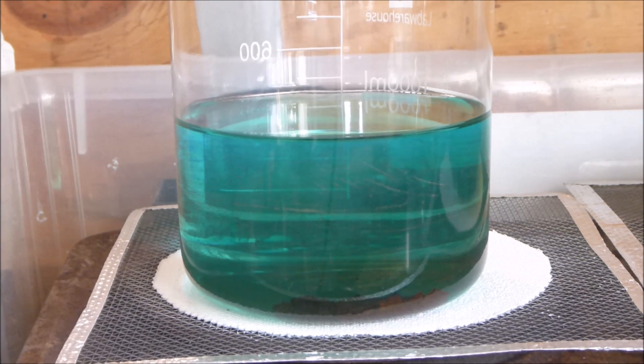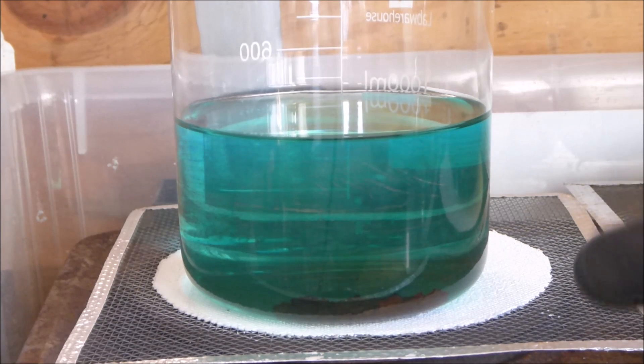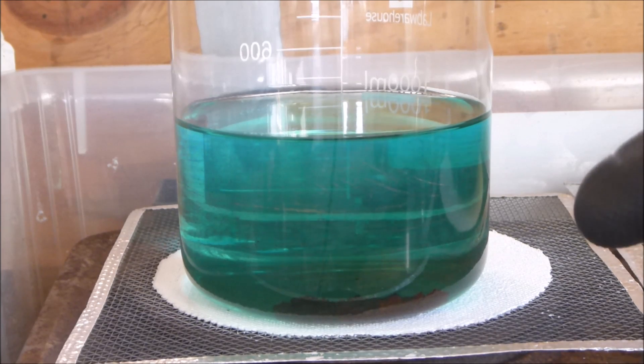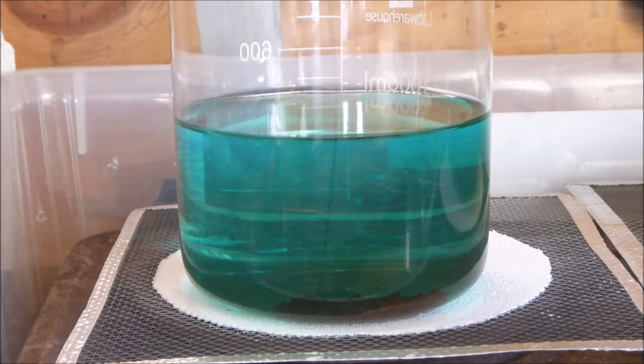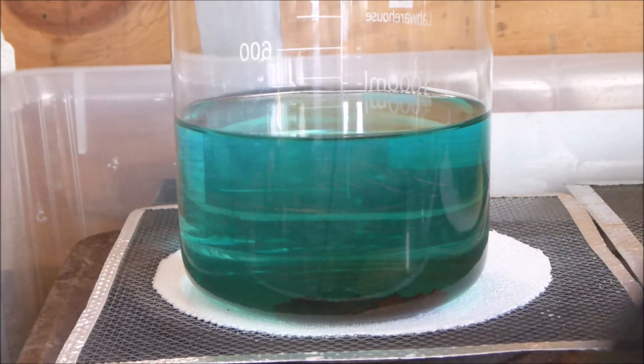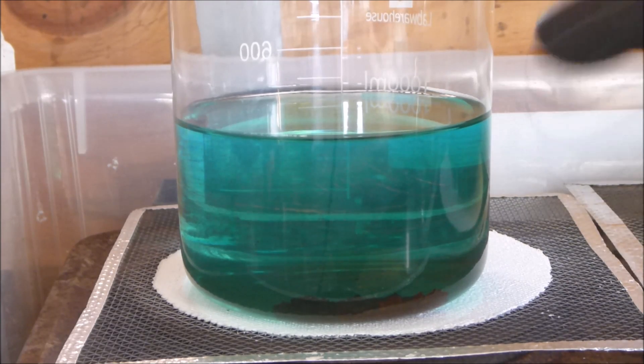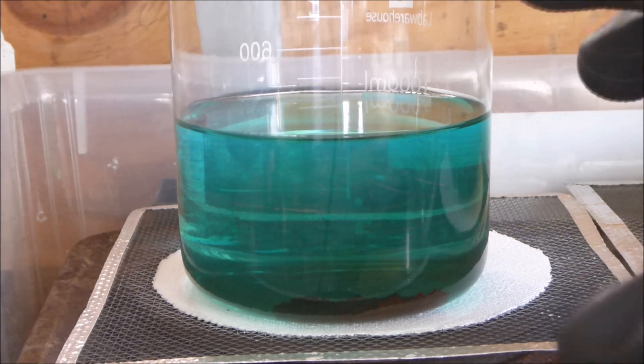Then I poured off the hydrochloric acid. I did do a stannous test just to make sure there was no gold in solution, but there hardly ever is at that point and there wasn't in this case. So the next step is that I dried out the material. At that point it was bond wires and IC legs that went through the sieves and things like that.